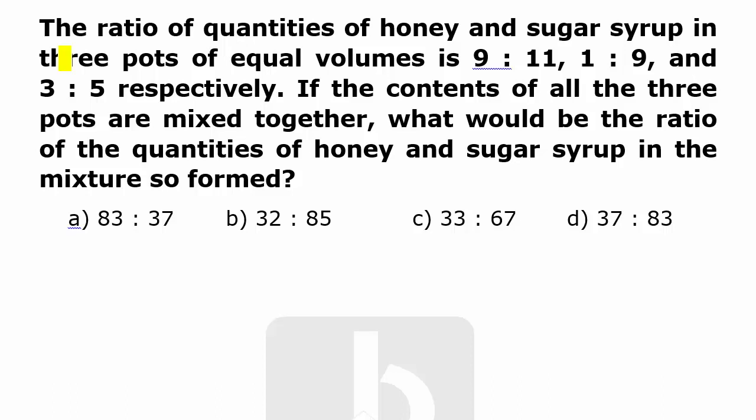In this question, he said that the ratio of quantities of honey and sugar in three pots having equal volumes is 9:11 in the first pot, 1:9 in the second pot, and 3:5 in the third pot.